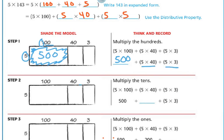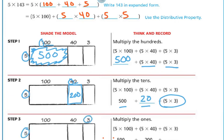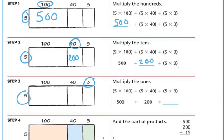In step 2, we're going to do this box: 5 times 40. And 5 times 4 is 20, plus my zero — so that's 200. Now we have 500 plus 200, and then the 5 times 3. So on the next step I'm going to do 5 times 3, and 5 times 3 is 15. So now I've got 500 plus 200 plus 15.